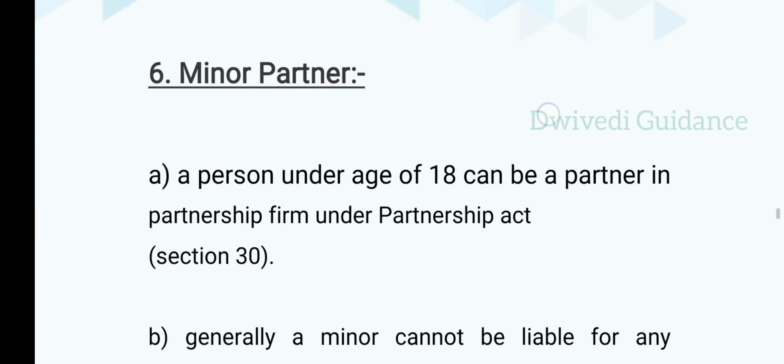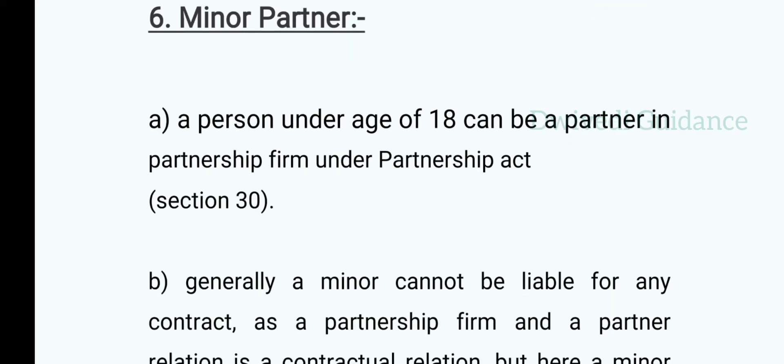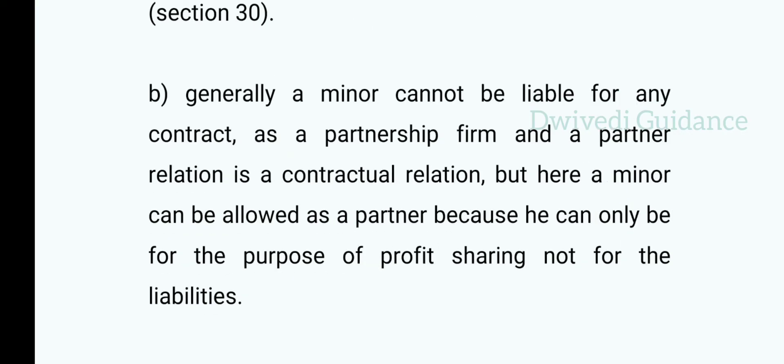Next is minor partner. A person under the age of 18 years can be a partner in a partnership firm under the Partnership Act, Section 30, as defined in the Partnership Act 1932. Generally, a minor cannot be liable for any contract, and the partnership relationship is a contractual relation. But a minor can be allowed as a partner only for the purpose of profit sharing, not for liability.